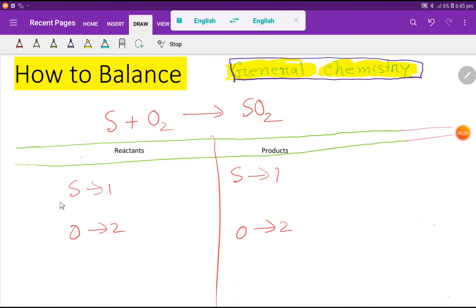To balance this reaction means we have to balance the number of sulfur and oxygen from both sides. So sulfur one, one - sulfur is already balanced. Oxygen two, two - oxygen is already balanced. So we can say that this is the balanced equation.